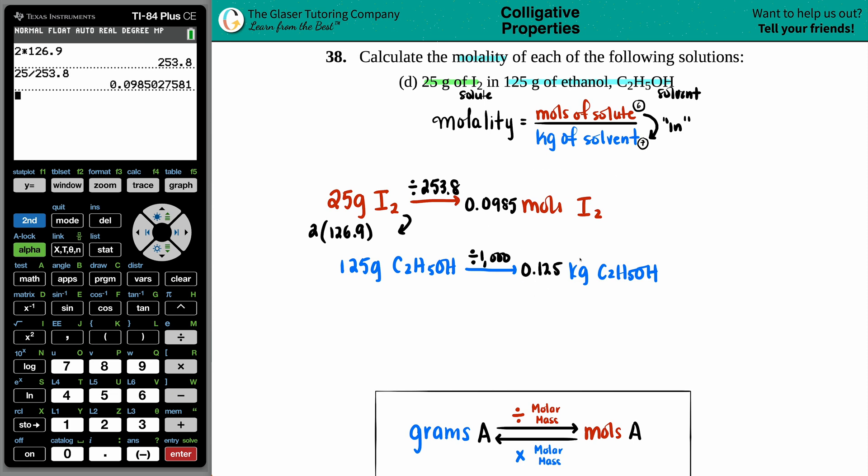Moles of the solute, kilograms of the solvent. We can now find out the molality, which by the way is always like this italics little m value. Capital M is molarity. Lowercase squiggly M is molality.